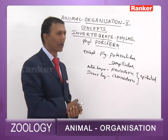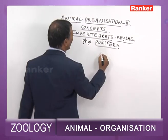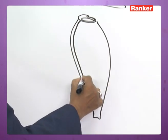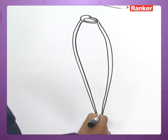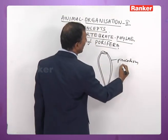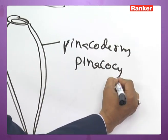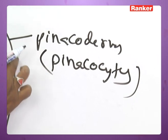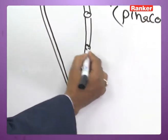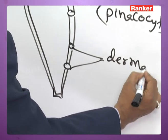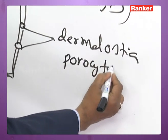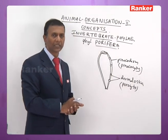The outer layer is pinacoderm and the inner layer is choanoderm. The pinacoderm is made up of several flat spindle-shaped cells called pinacocytes, and it is perforated by numerous apertures called dermal ostia. Dermal ostia are the modified porocytes.